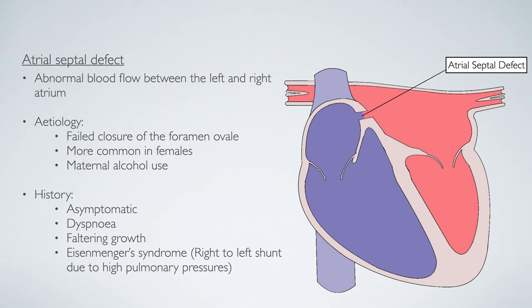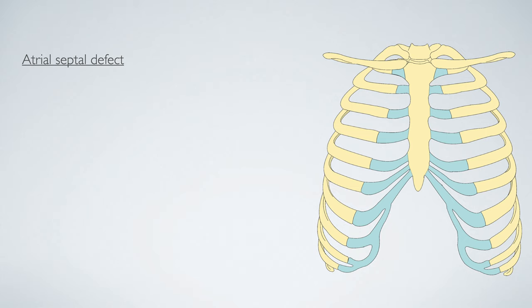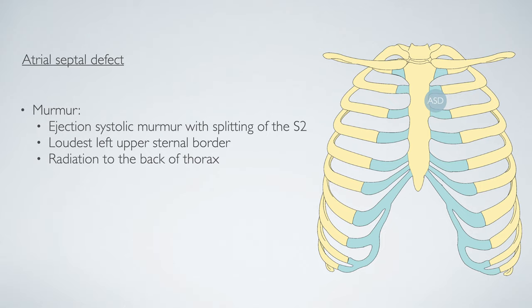Atrial septal defect may also present as ischemic stroke in later life. Small blood clots form in the venous system and are able to pass from the right to the left side of the heart through the defect. Once in the arterial circulation they can travel to the brain and cause strokes. Therefore, any young person with an unexplained stroke should be checked for atrial septal defect. The murmur is an ejection systolic murmur with splitting of S2, heard loudest at the left upper sternal border, radiating to the back of the thorax.